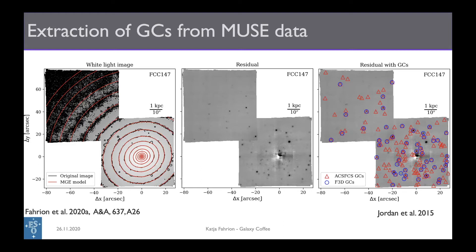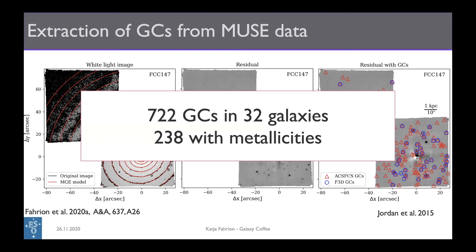In the end we have a cleaned globular cluster sample for all of these galaxies, from which we can get spectra, do fitting, and derive line-of-sight velocities and metallicities. For the full Fornax 3D sample, we now have a catalogue of 722 globular clusters with line-of-sight velocity measurements, with a subsample that is bright enough for metallicity measurements.